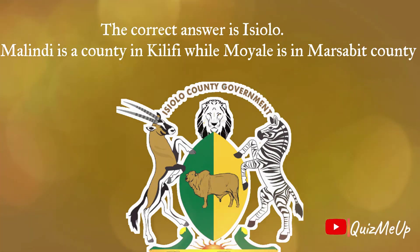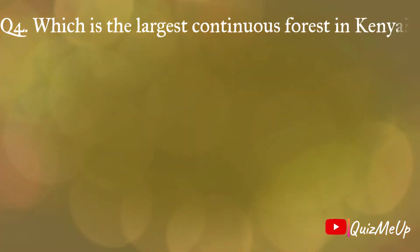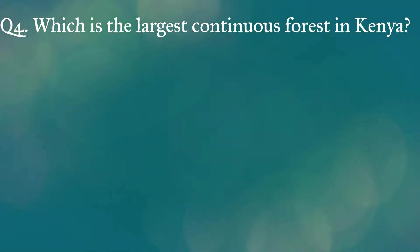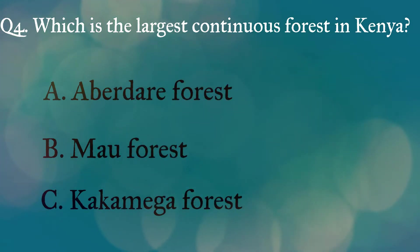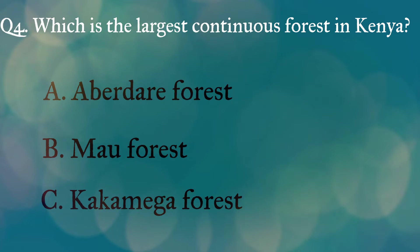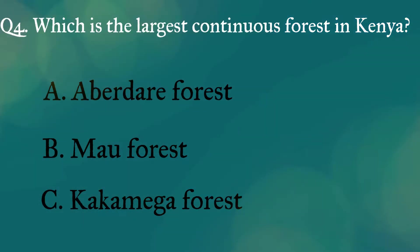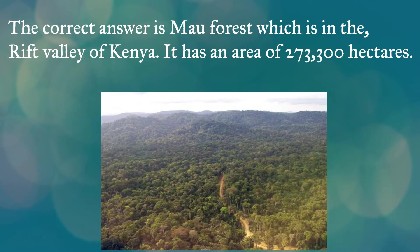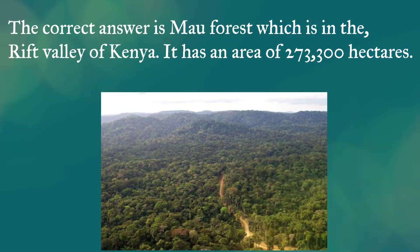Question 4: Which is the largest continuous forest in Kenya? A: Aberdare Forest, B: Mau Forest, C: Kakamega Forest. The correct answer is Mau Forest, which is in the Rift Valley of Kenya. It has an area of 273,300 hectares.